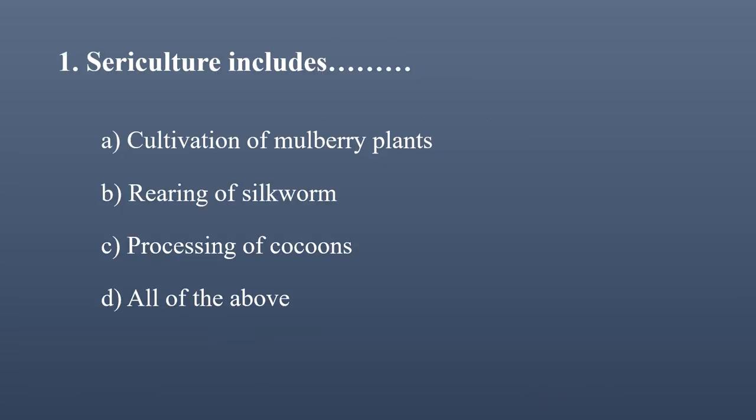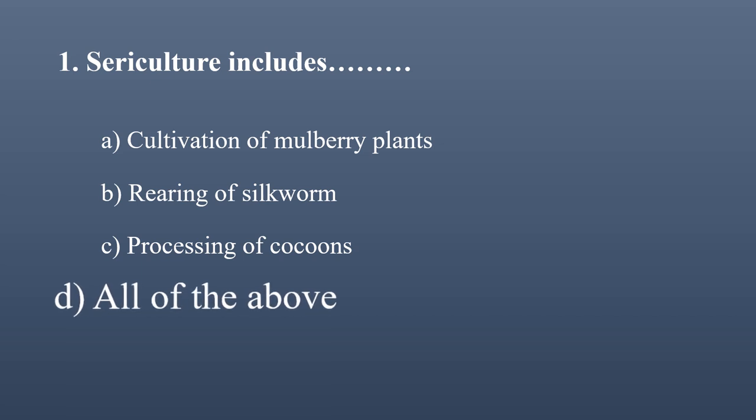First MCQ: Sericulture includes — options are: first, cultivation of mulberry plant; second, rearing of silkworm; third, processing of cocoon; and fourth, all of the above. Sericulture has three divisions: agricultural division (cultivate mulberry), entomological division (rear silkworm larvae), and technical division (process cocoons). The correct option is D, all of the above.